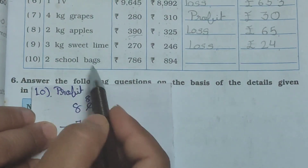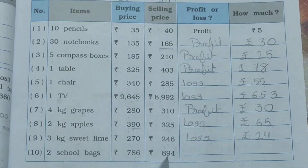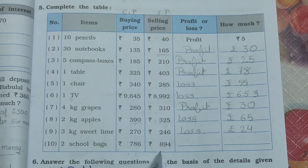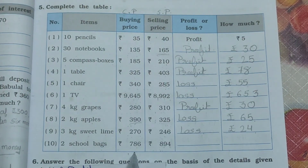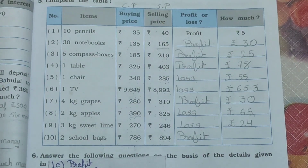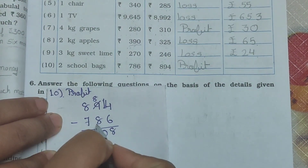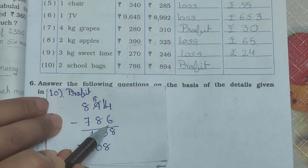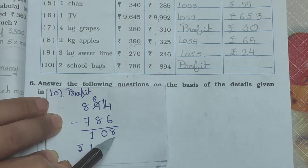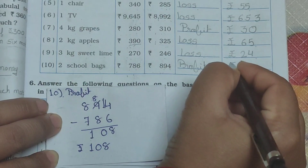Now see the 10th one. Items is 2 school bags. Buying price, Cp, is Rs.786. Selling price is Rs.894. Sp is greater than Cp — whenever selling price is greater than buying price or cost price, we get the profit. Write down profit. Profit is equal to Sp minus Cp: 894 minus 786. 4 minus 6 not possible, borrow from 9 — becomes 8 and 14. 14 minus 6 = 8. 8 minus 8 = 0. 8 minus 7 = 1. So Rs.108 is your profit.